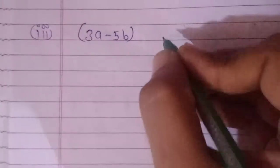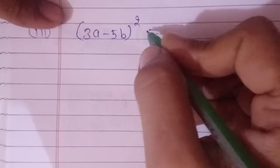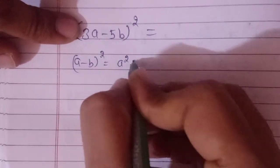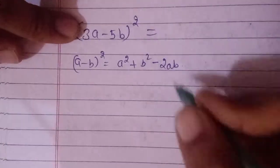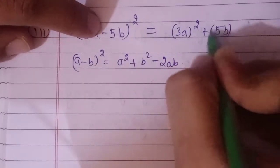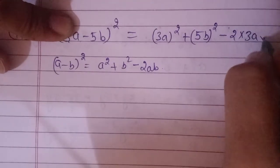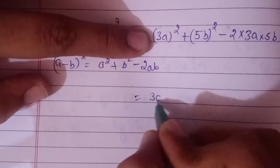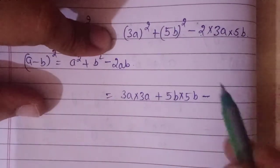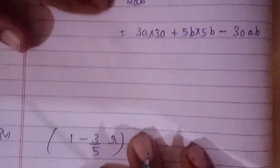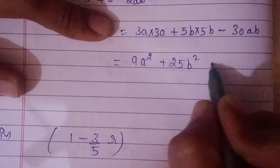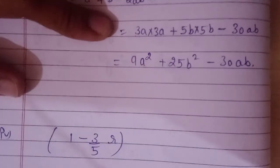Now let's move to the next question: (3a - 5b). The question is asking to calculate the square, so I put the square. This is (a-b)², so I am using the property (a-b)² = a² + b² - 2ab. So it will be (3a)² + (5b)² - 2×3a×5b. That gives 9a² + 25b² - 30ab. This will be the answer.